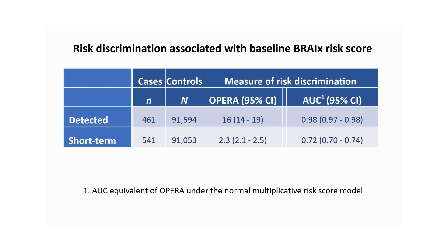When we fit our statistical model — our opera — the opera for detection is 16: a 16-fold increase in risk per standard deviation, highly significant, equivalent to an AUC of 0.98, which is exactly what we observe. But what matters is not the overall AUC — it's the left-hand side of the ROC curve, where AUCs can be completely deceptive. For short-term prediction, the opera is 2.3 per standard deviation, equivalent to an AUC of 0.72 — very similar to what Mads just showed us. The polygenic risk score opera is 1.65, so it's nowhere near 2.3.